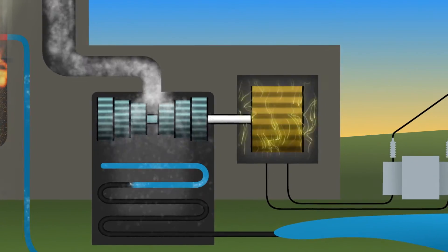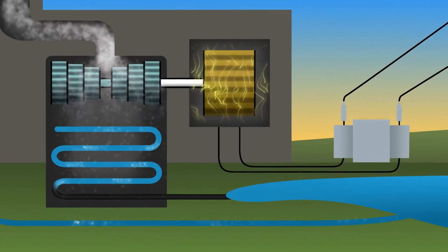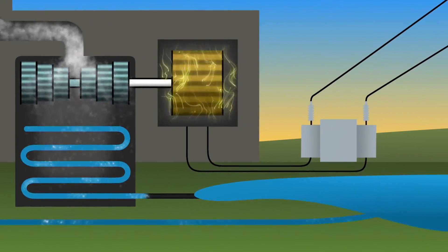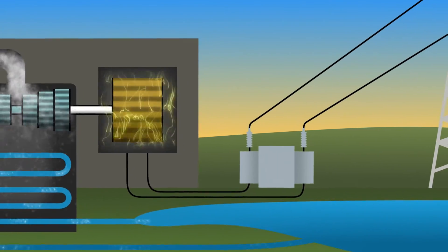A condenser captures the steam, turning it back into water to be used again in the boiler. Outside water in separate pipes cools the condenser and then returns to a holding pond.